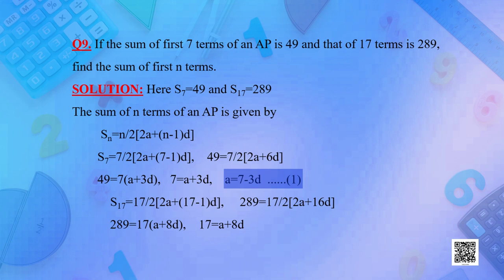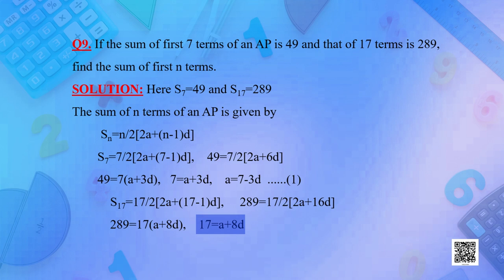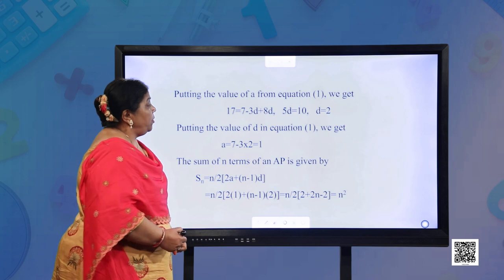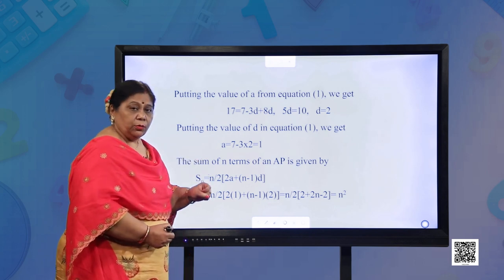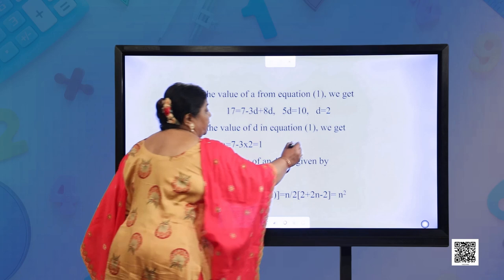And S17 = 17/2 × (2A + 16D) = 289 = 17(A + 8D), which simplifies to 17 = A + 8D (equation 2). Subtracting equation 1 from equation 2: 5D = 10, so D = 2. Substituting back into equation 1: A = 7 − 3×2 = 1.